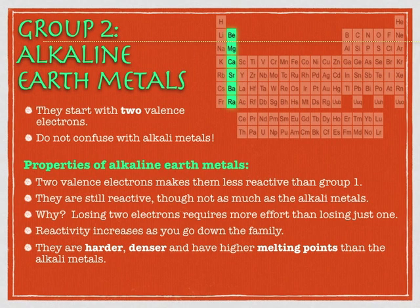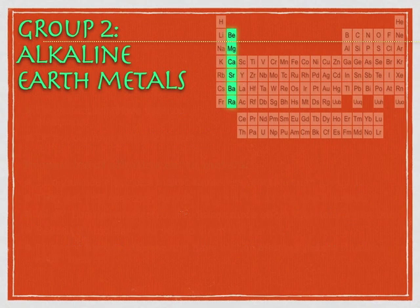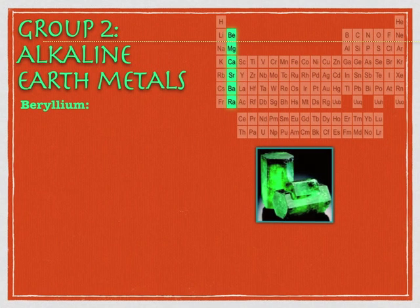Alkaline earth metals are harder, denser, and have higher melting points. If you've ever gotten your hands on a piece of magnesium, you'll definitely notice that it's tougher than something like sodium metal. So a couple of the alkaline earth metals are worth talking about.